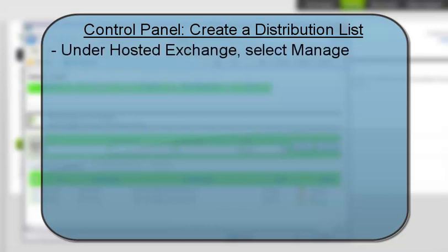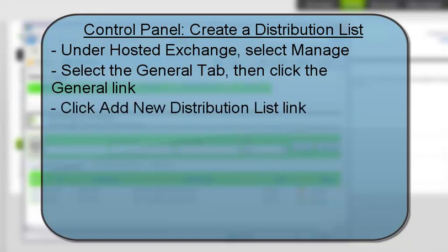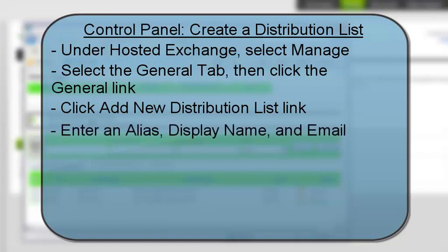To review, these are the steps for creating a new distribution list and adding members in the control panel. Log into the control panel and select Manage under the Hosted Exchange section. On the Hosted Exchange dashboard, select the General tab and click the General link. Select the Distribution List link at the bottom of the page. A new window will open — click the Add New Distribution List button. Enter an alias, display name, and email address, then select a security level. Click Submit when finished and the new distribution list is created.